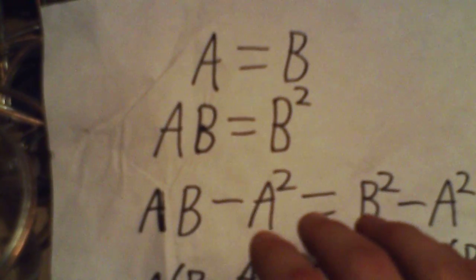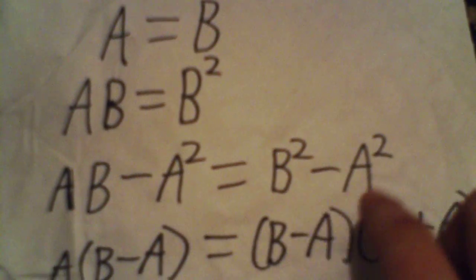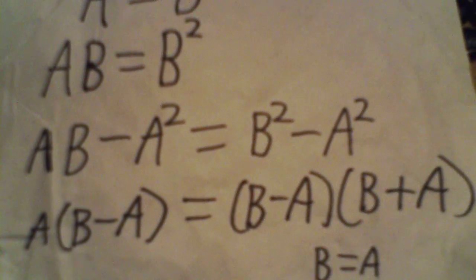Subtract an A squared from both sides so you get AB minus A squared equals B squared minus A squared. And then you simplify so they get A times B minus A equals B minus A, B plus A.